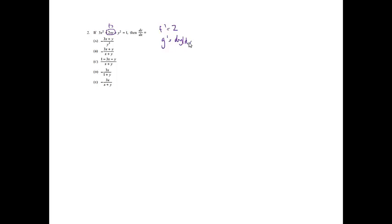Number 2. If 3x squared plus 2xy plus y squared equals 1, then dy/dx equals what? We're asked to find the derivative. I notice in the middle of the problem I'll have to use the product rule. f prime equals 2, g prime equals 1 times dy/dx. We are using implicit differentiation here.